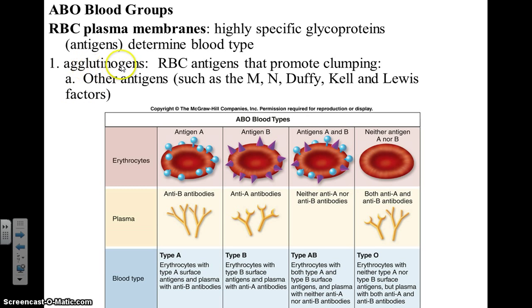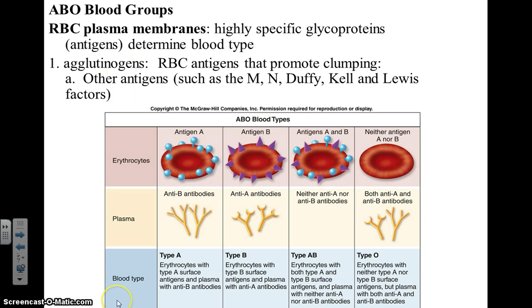These proteins on our red blood cells are called agglutinogens, which means to begin agglutination or clumping. Blood will clump when antibodies against those agglutinogens are present.